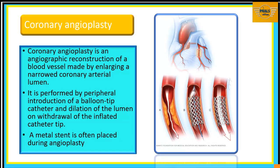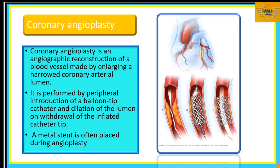Coronary angioplasty is an angiographic reconstruction of a blood vessel made by enlarging a narrow coronary arterial lumen. It is performed by peripheral introduction of a balloon-tipped catheter and dilation of the lumen on withdrawal of the inflated catheter tip. In the image we can see the lumen narrowed by plaques and the balloon-tipped catheter introduced to enlarge it. Usually a metal stent is also placed during this angioplasty.